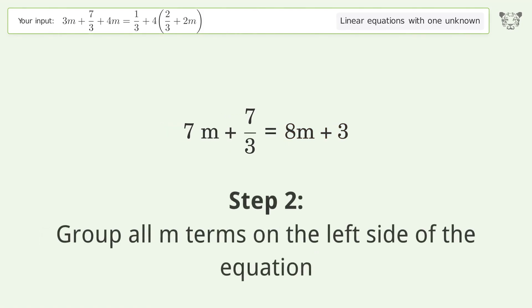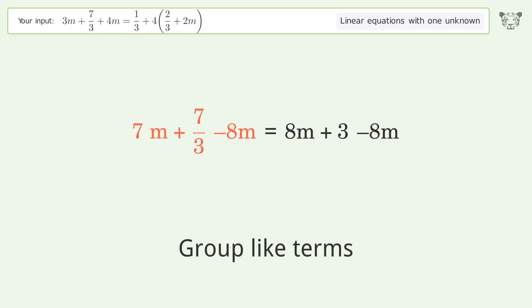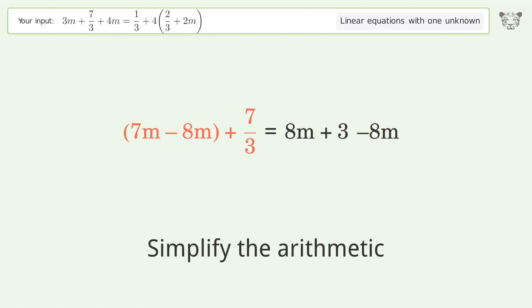Group all m terms on the left side of the equation. Subtract 8m from both sides. Group like terms. Simplify the arithmetic.